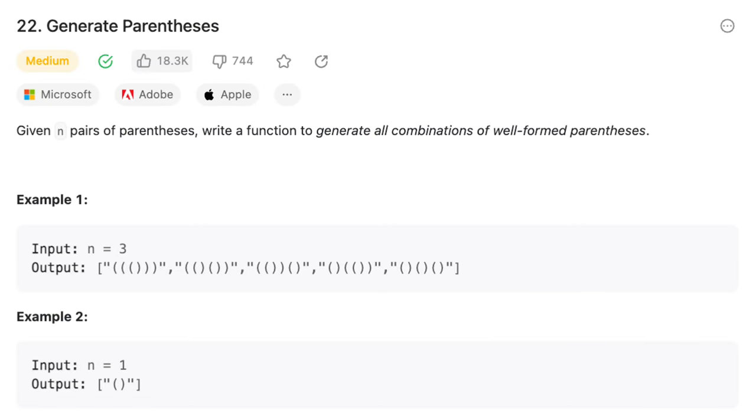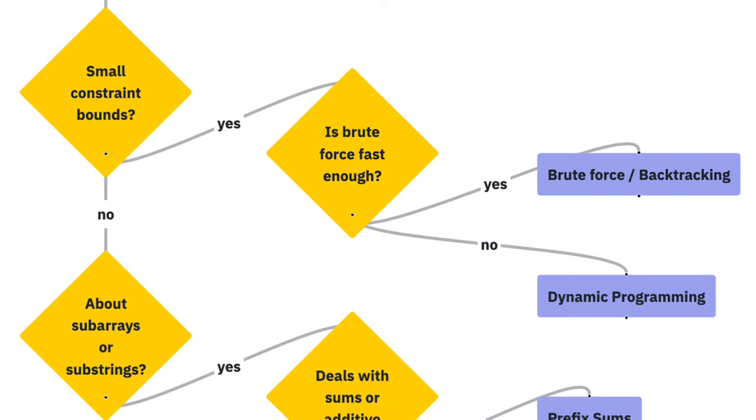Let's explore a different problem. Given n pairs of parentheses, write a function to generate all combinations of well-formed parentheses. We can observe that the problem constraints are quite small. Precisely speaking, n doesn't exceed 8. Because of this, our attention should be on the small constraints node in the flowchart.